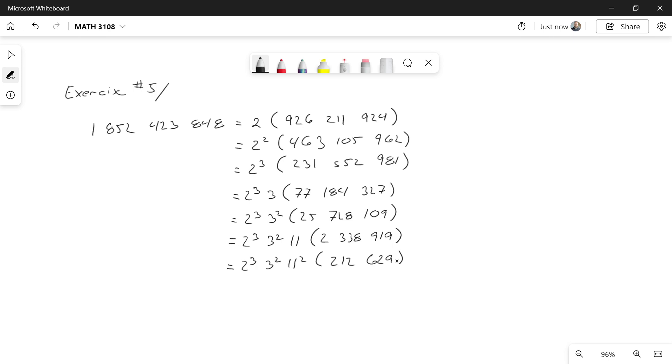And again, if I keep going through this, I'm not going to be able to factor out another 11. The next prime I'm going to be able to take out is a 19. And again, you can verify at home that this is correct. There's going to be three factors of 19 I'm going to be able to take out. So I have 2 to the 3, 3 to the 2,